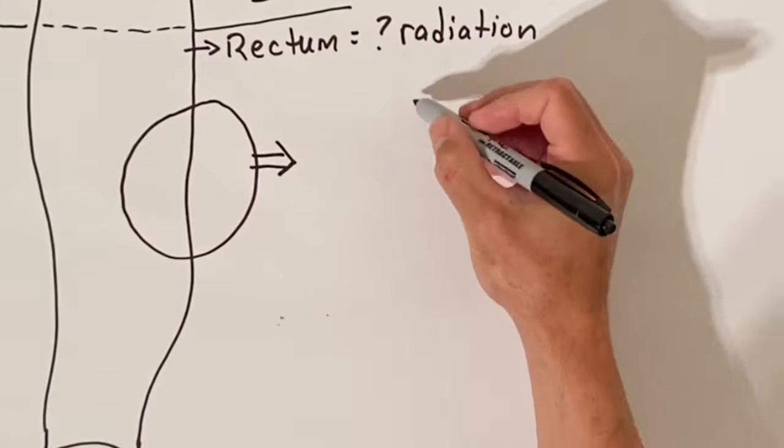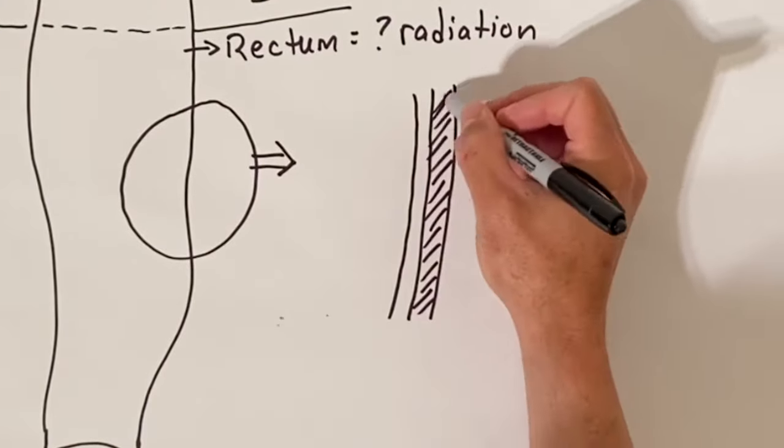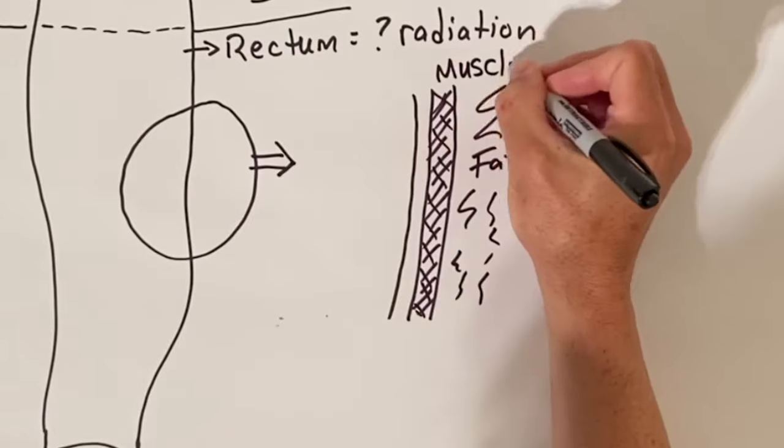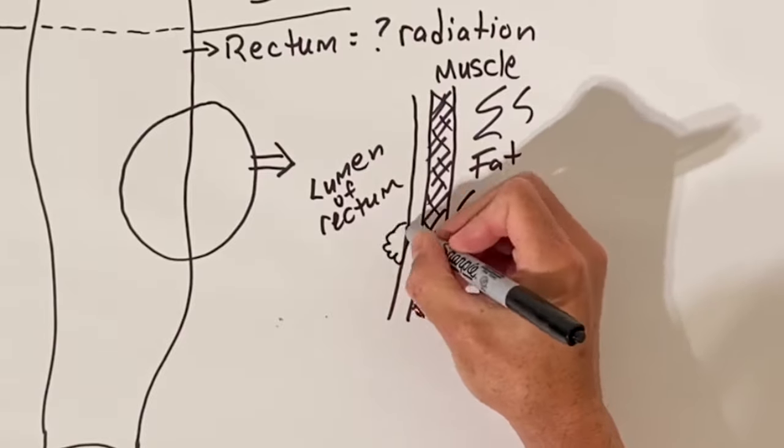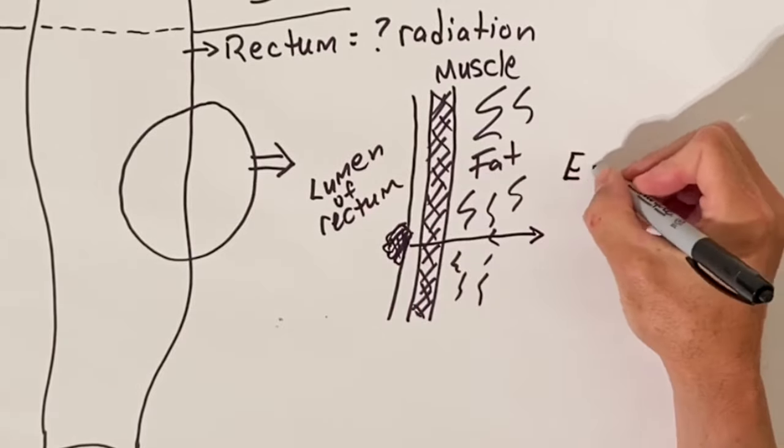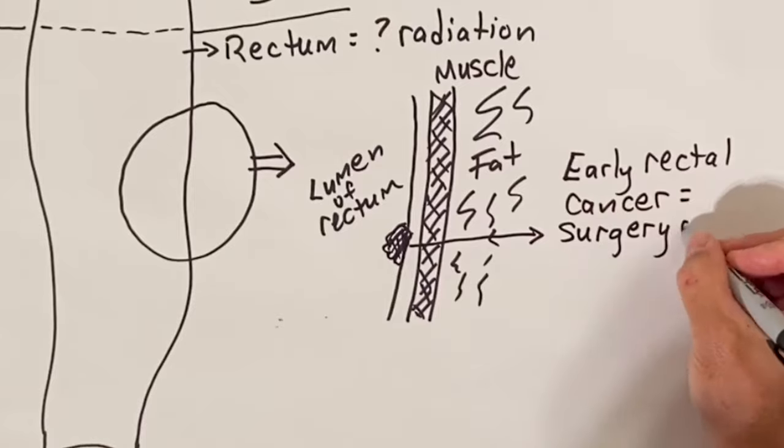Let's magnify a portion of the rectum. The wall of the rectum has layers and the middle layer is muscle. For early rectal cancer that has not invaded through the muscle layer in the wall, you may just have surgery and not get any chemotherapy or radiation.